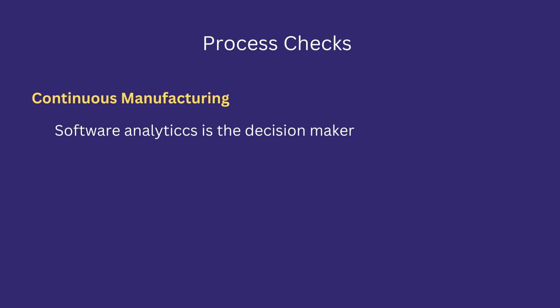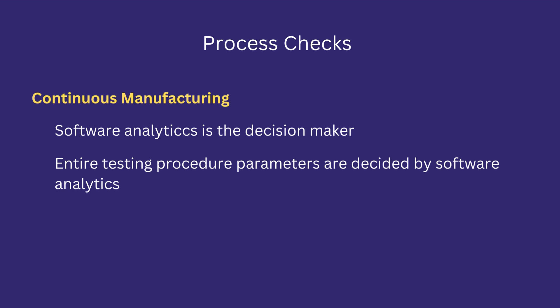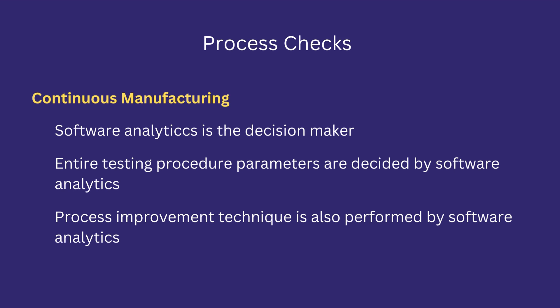In continuous manufacturing, software analytics is used as the decision maker without human intervention. The entire testing procedure parameters are decided by software analytics, and process improvement techniques are also performed by software analytics.